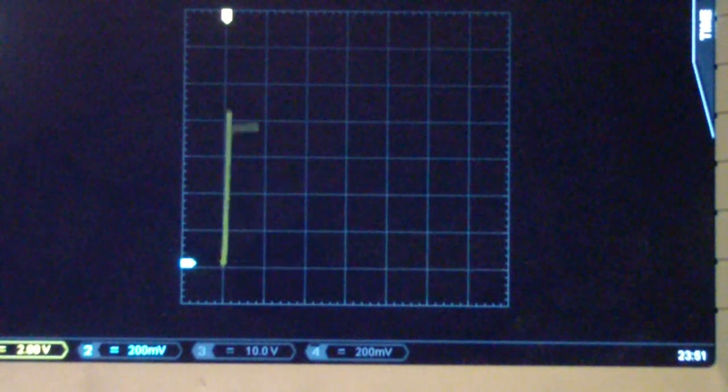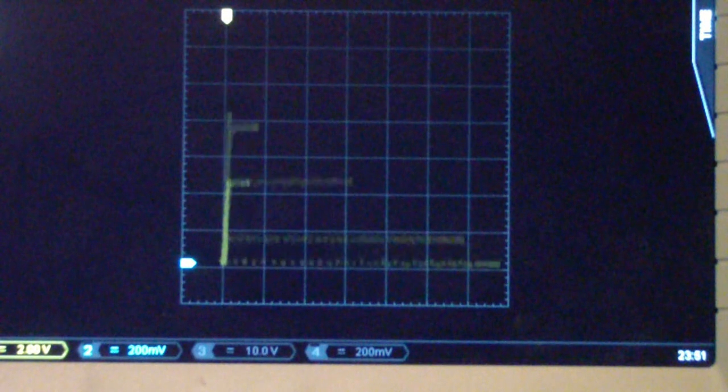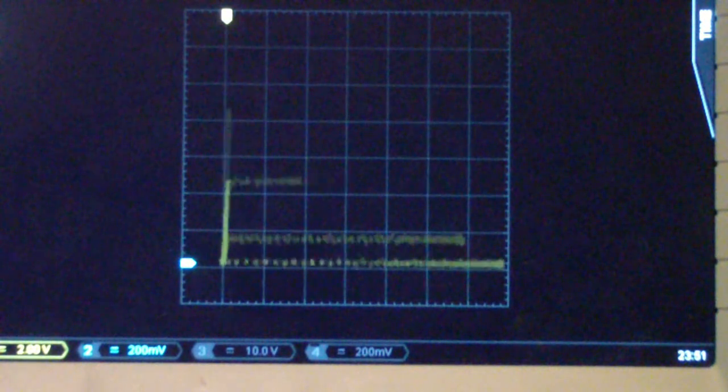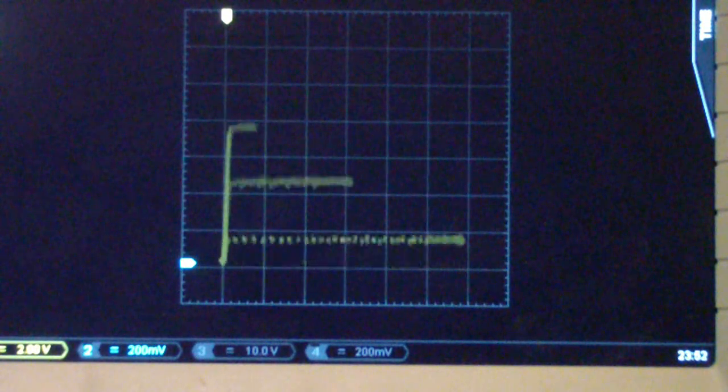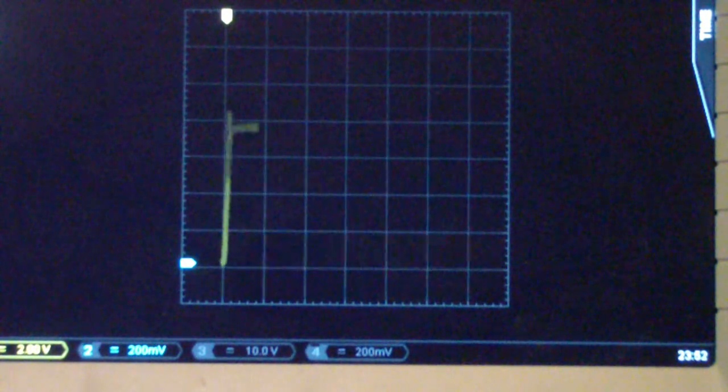On the oscilloscope screen are a family of curves from a 2N3904 transistor being displayed by a device called the Judd Williams Curve Tracer.